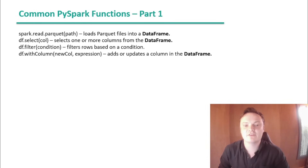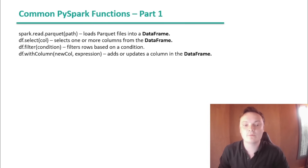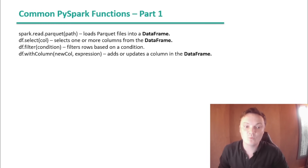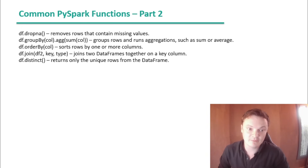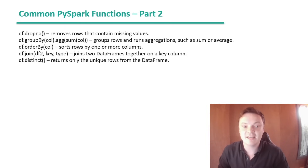Some common PySpark functions: spark.read.parquet loads parquet files into a data frame. df.select selects one or more columns. df.filter filters rows based on a condition. df.withColumn adds or updates a column. df.dropNA removes rows with missing values. df.groupBy(column).aggregate groups rows and runs aggregations such as sum or average. df.orderBy sorts rows, df.join joins two data frames on a key column, and df.distinct returns only unique rows.